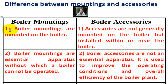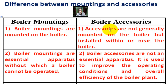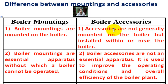Number 1. Boiler mountings are mounted on the boiler — that means they are generally mounted on the surface of the boiler. Boiler accessories, on the other hand, are not generally mounted on the boiler but are installed within or near the boiler. They are an additional part of the boiler but not mounted directly on it.